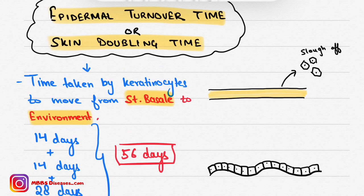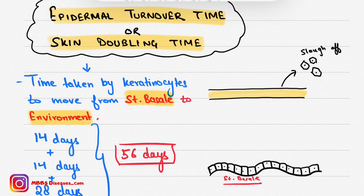Looking at this diagram, stratum basale is the lowermost layer of the epidermis and stratum corneum is the topmost layer. The total turnover time is 56 days.